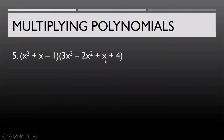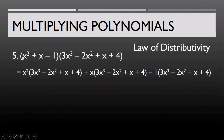The multiplication of a trinomial and a polynomial with four terms also applies the law of distributivity, just like in the previous example. We distribute x² to the four-term polynomial, distribute positive x to the four-term polynomial, and distribute negative 1 to the four-term polynomial as well. So we have x² + x − 1 multiplied by the four-term polynomial.